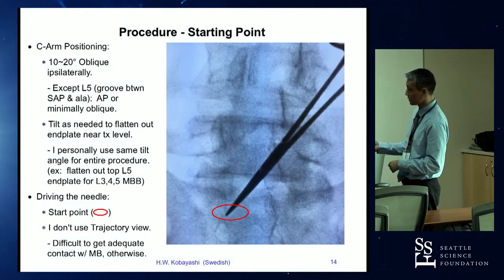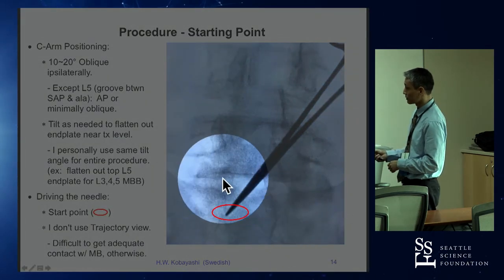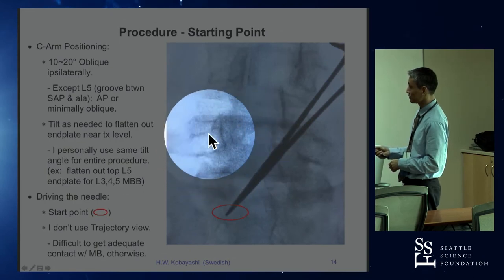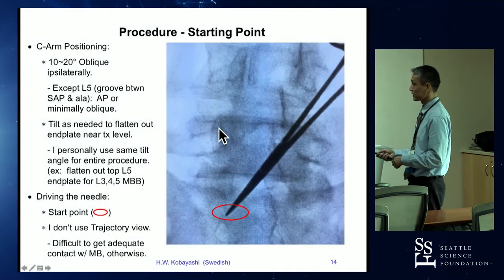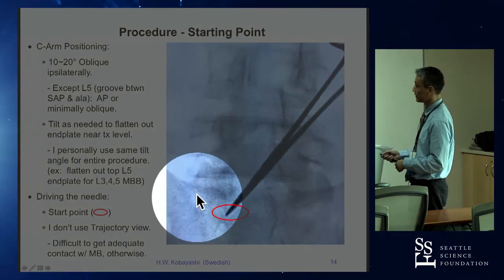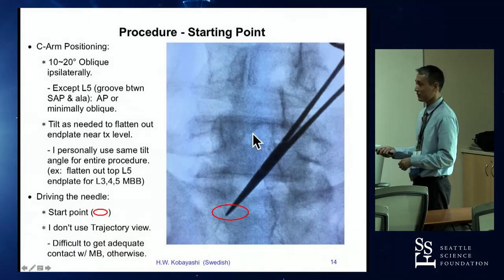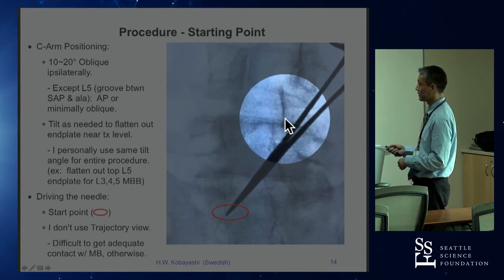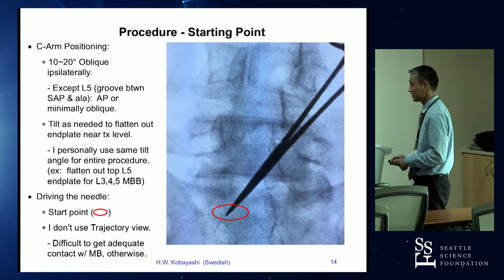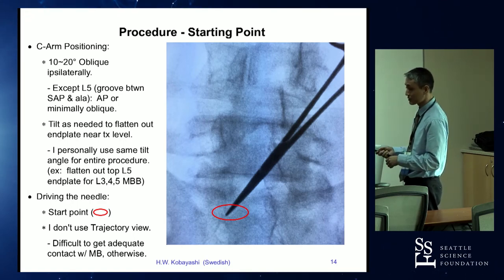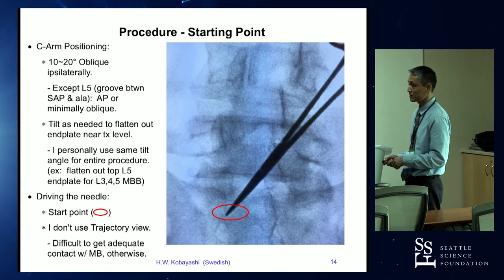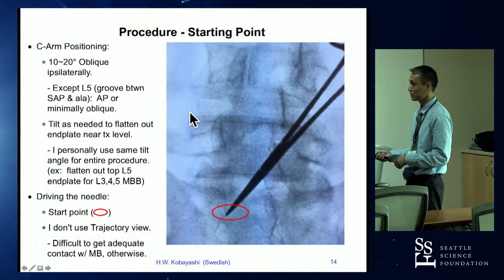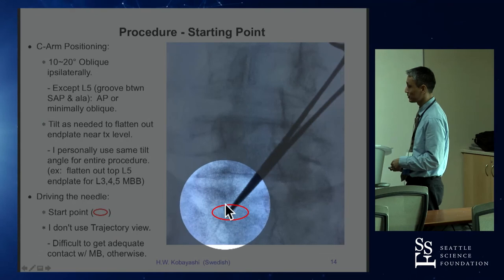I've obliqued 15 degrees toward the left and flatten out the end plate closest to where I'm treating. When doing L3, L4, and L5 RFA, I take the average location — roughly the superior end plate of L5 — flatten that out, and use that tilt for all three levels. Some patients have spine geometry requiring more tilt; on average I tilt about 10 degrees. If you have to tilt more than that, the needle entry point will need to be further down.